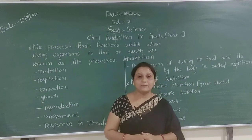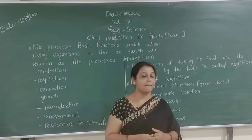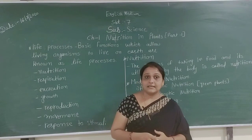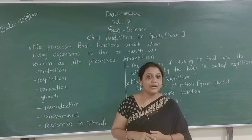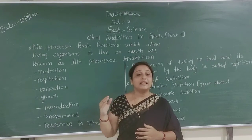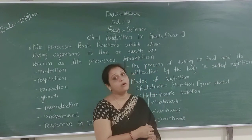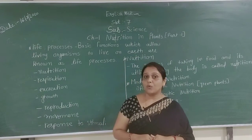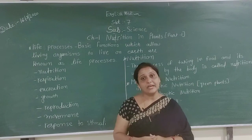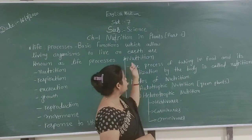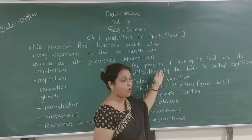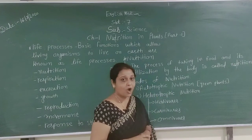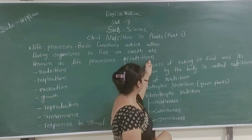We can get different types of nutrients from food, for example carbohydrates, vitamins, minerals, protein, water, fiber, etc. There are seven main components of nutrients we can get from food. These nutrients are very important to our body to stay healthy and also protect us from many types of disease.